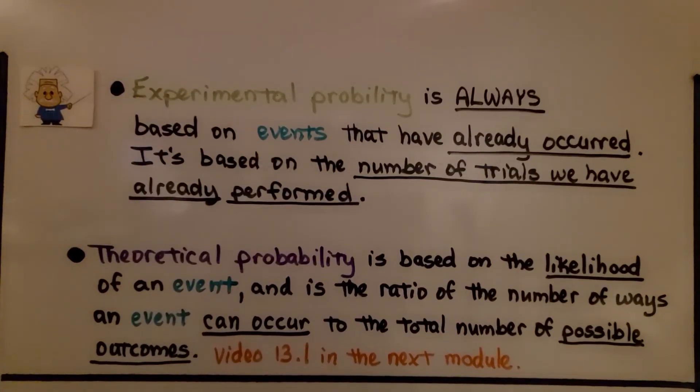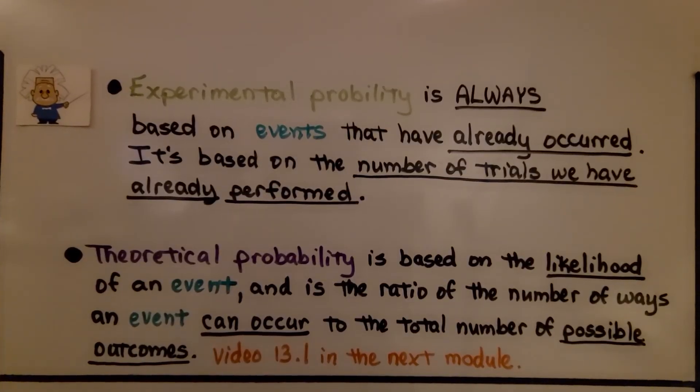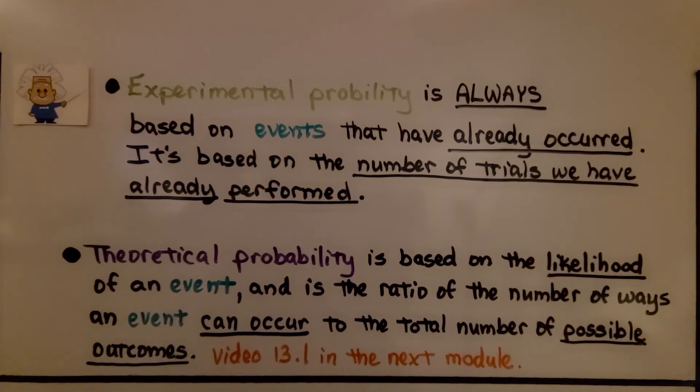Experimental probability is always based on events that have already occurred. It's based on the number of trials we have already performed. Theoretical probability is based on the likelihood of an event, and is the ratio of the number of ways an event can occur to the total number of possible outcomes.